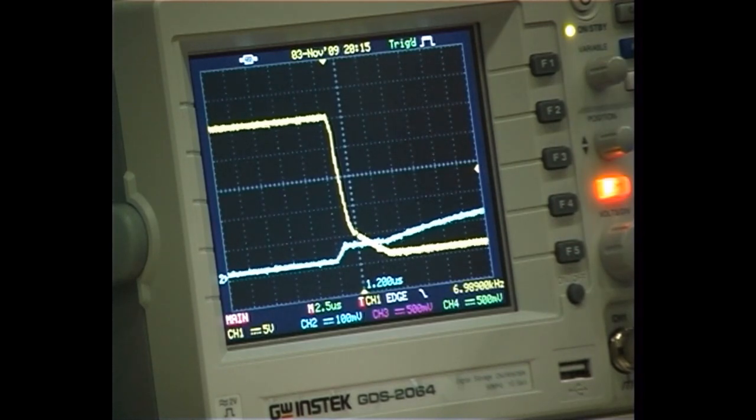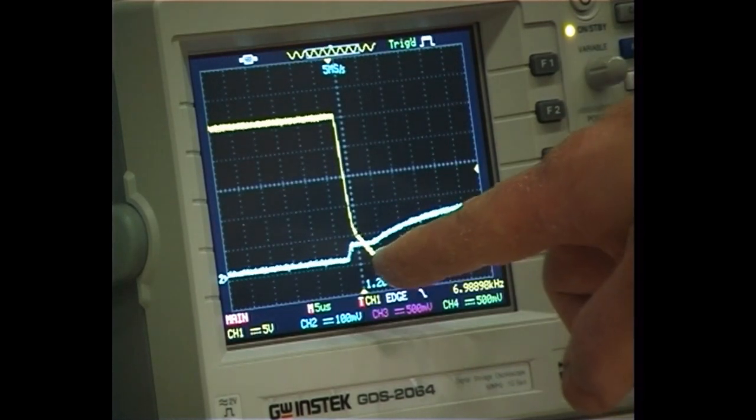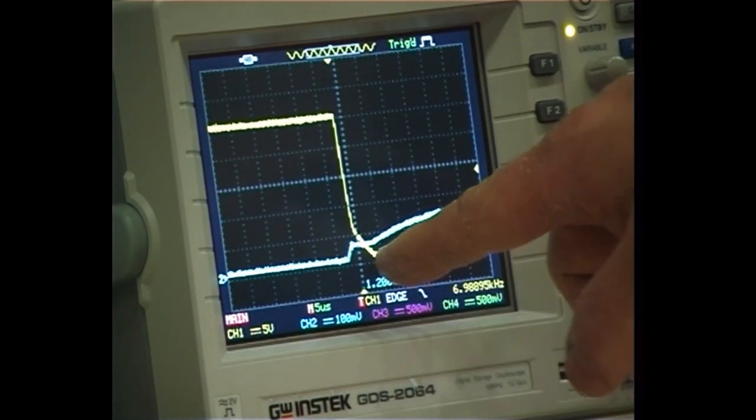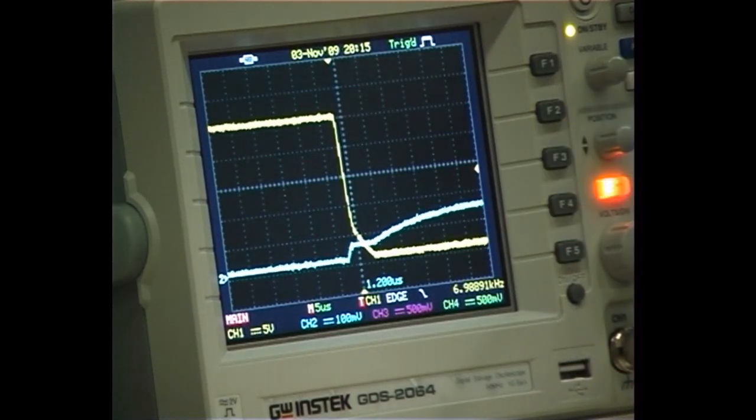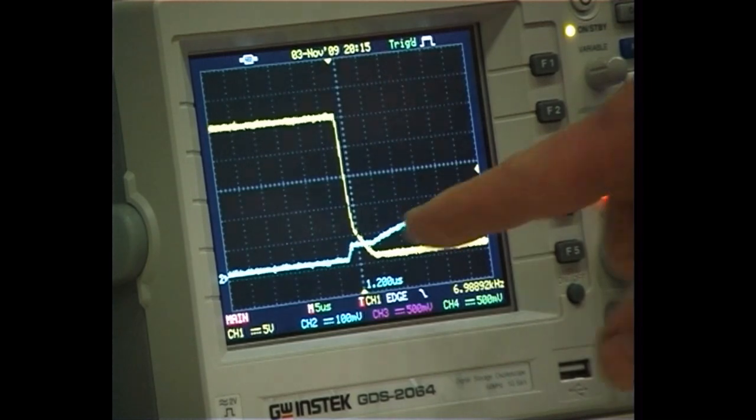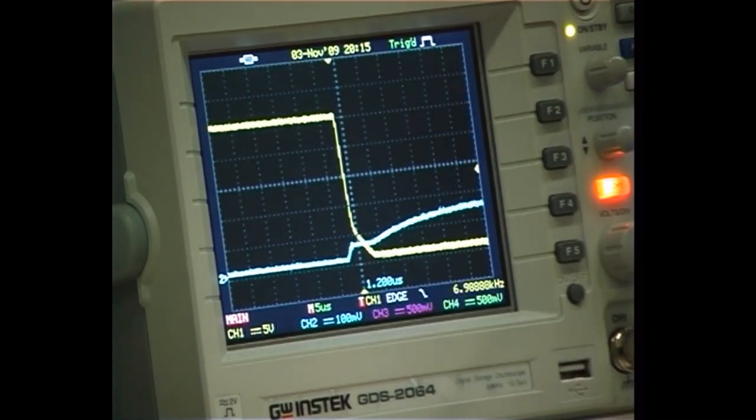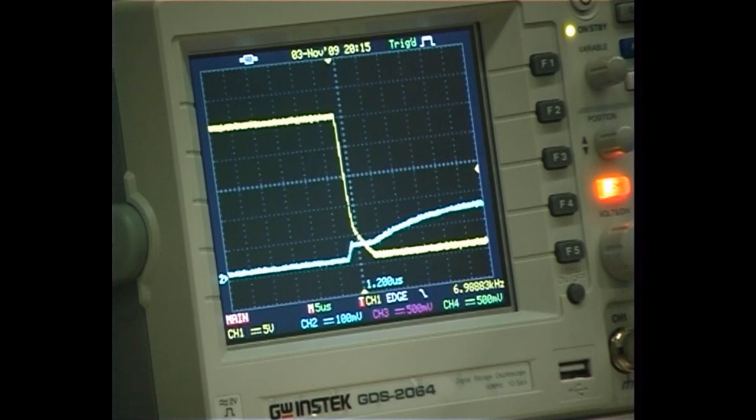When those volts have gone back to roughly zero, our on-state voltage, then the gate source voltage can resume its rise, its exponential rise.